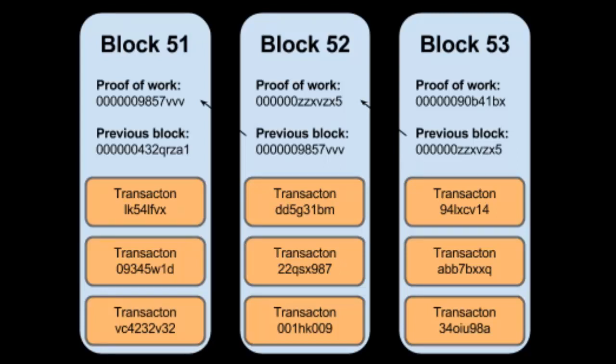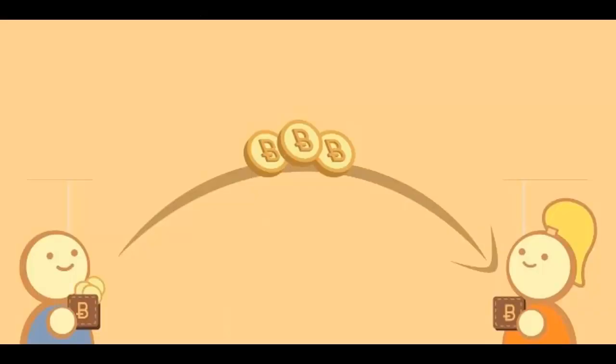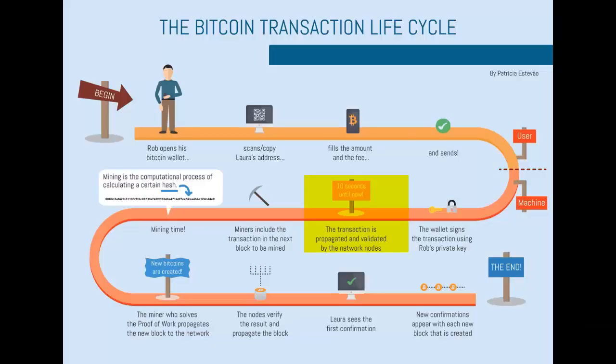Let's say John sends three Bitcoins to Jenny. This transaction gets sent out to every node on the Bitcoin network. The different computers are running specialized Bitcoin software that allows them to check that this transaction has satisfied a certain set of rules. If the transaction satisfies these rules, it is approved, and each node will add the transaction to a pool of other recent transactions that have also been approved. This is known as a block.